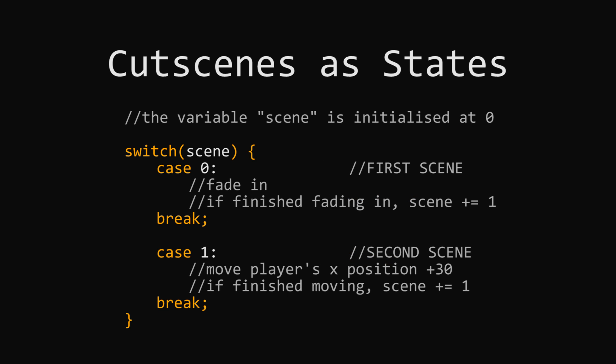We could have a variable called scene, and depending on what scene is equal to, we will execute different code. In the case that it's equal to zero, we'll execute the code for fading in; if it's equal to one, then we'll move the player over 30, and so on. We keep going until that cutscene is finished.